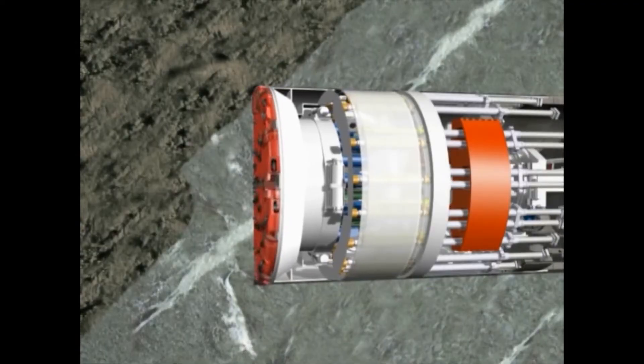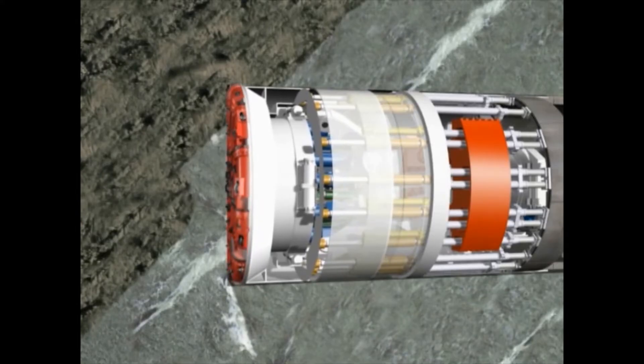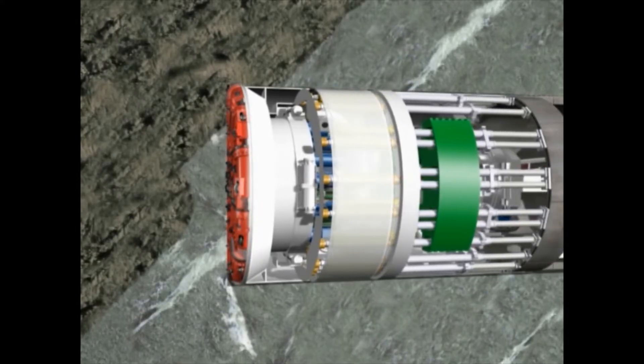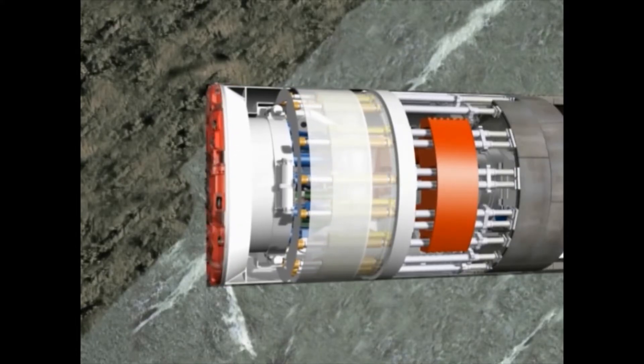The continuous excavation can only be performed in rock sections without fault zones, because the gripper shoes use the surrounding rock as counter-bearing. Therefore, the telescopic front shield can only be opened in stable rock conditions.